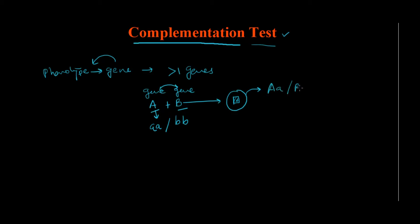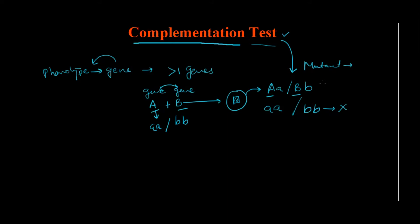So these two genes complement each other to give you a phenotype. At minimum, one wild-type copy of each gene should be present. If there is a homozygous recessive mutation in either gene, you will not observe the phenotype. What the complementation test does is, when you have a mutant showing absence of a phenotype, it helps you determine whether the mutation is in the same gene or in two different genes.